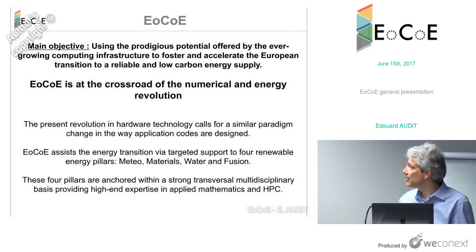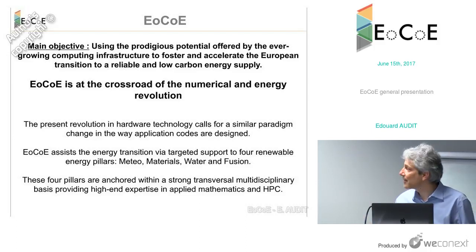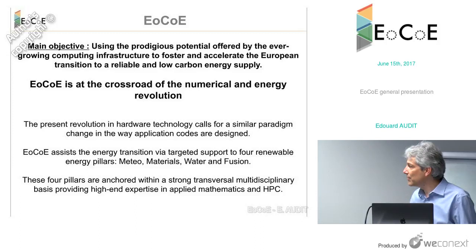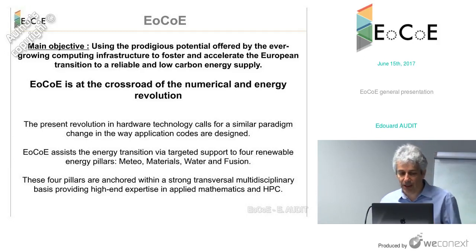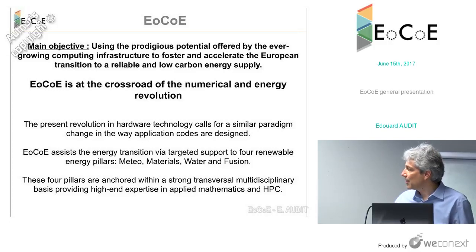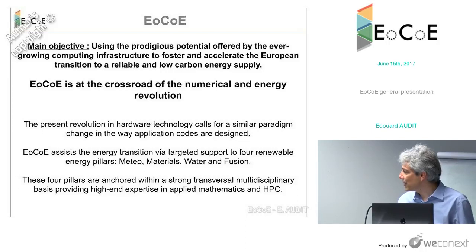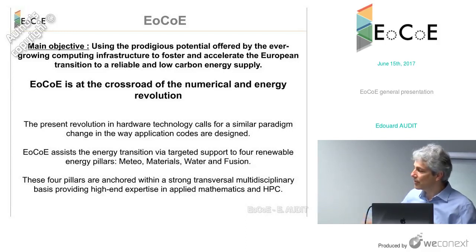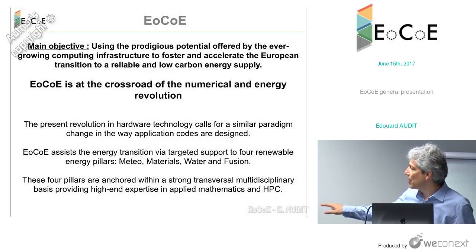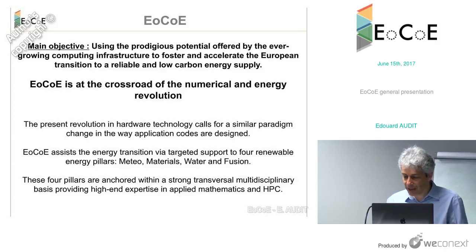ECO is triggered in this context, at the crossroad of these two revolutions. The goal of ECO is to use the potential of exascale architecture to help and accelerate the energy transition. Hardware is going to change a lot with complex memory hierarchy and complex compute. Codes and application designs will need to change. We are working on four energy pillars: Meteo for Energy, Material for Energy, Water for Energy, and Fusion for Energy. These four pillars are supported by a strong transversal basis connecting HPC hardware and energy applications.